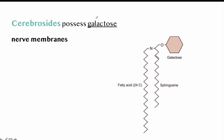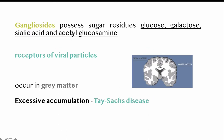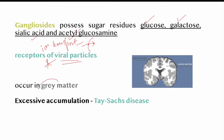Cerebrosides possess the sugar residue galactose and occur in nerve membranes. Gangliosides possess four sugar residues: glucose, galactose, galactose, sialic acid, and acetyl glucosamine. Gangliosides influence ion transport through the membrane and also function as receptors for viral particles. Gangliosides occur in the gray matter of the brain, and excessive accumulation of gangliosides produces a disorder known as Tay-Sachs disease. Both cerebrosides and gangliosides contain sugar residues, so they are known as glycolipids.